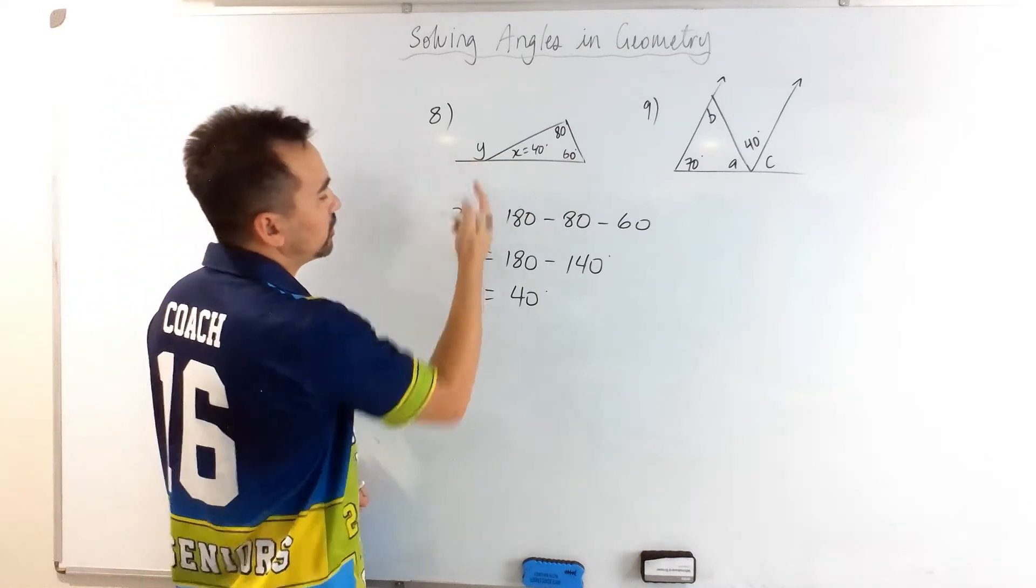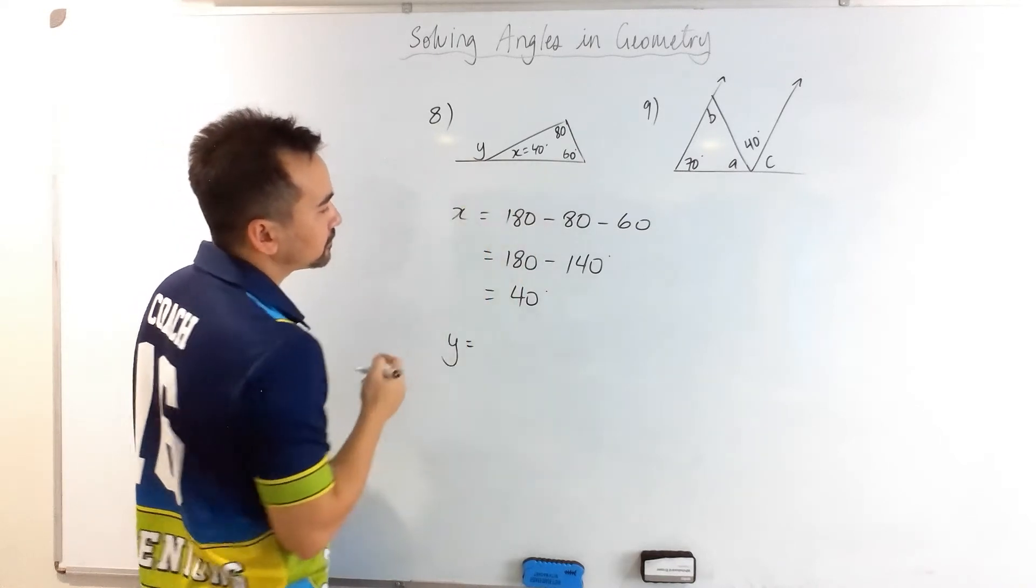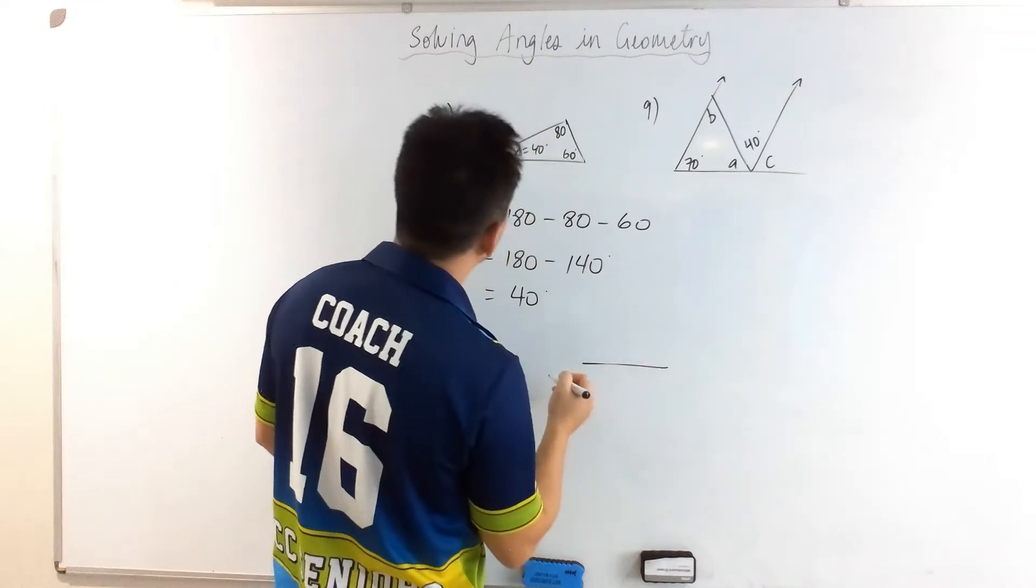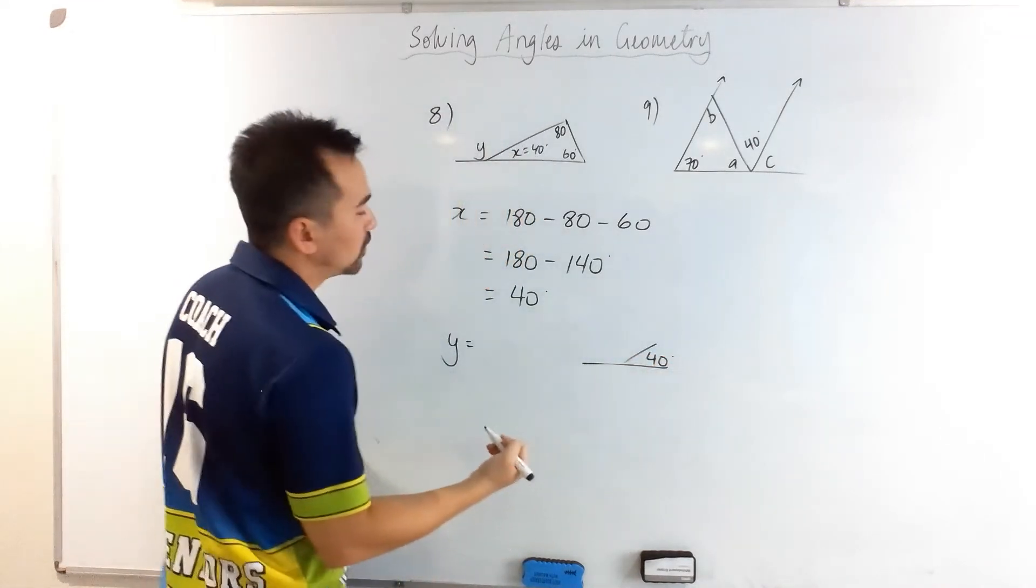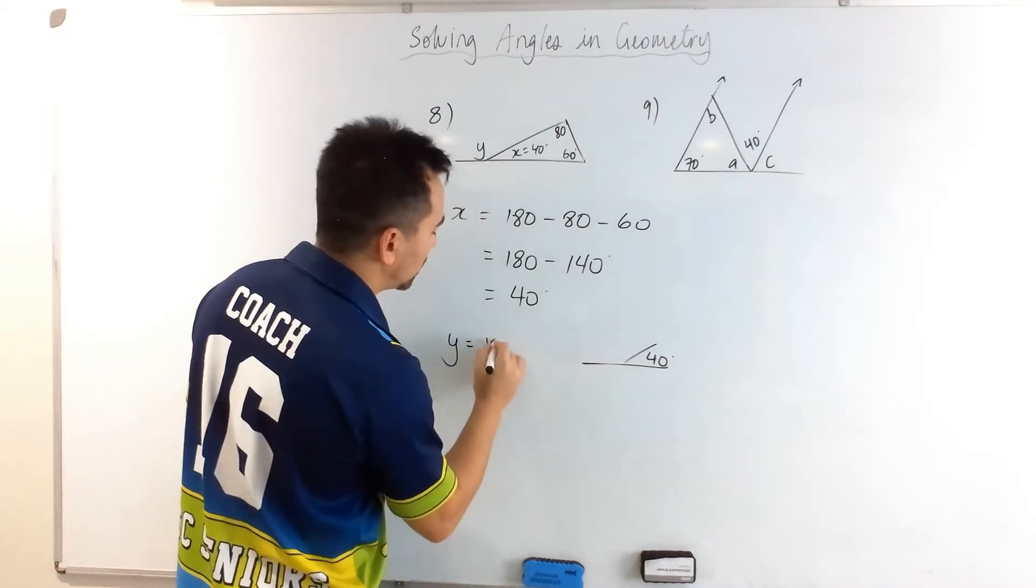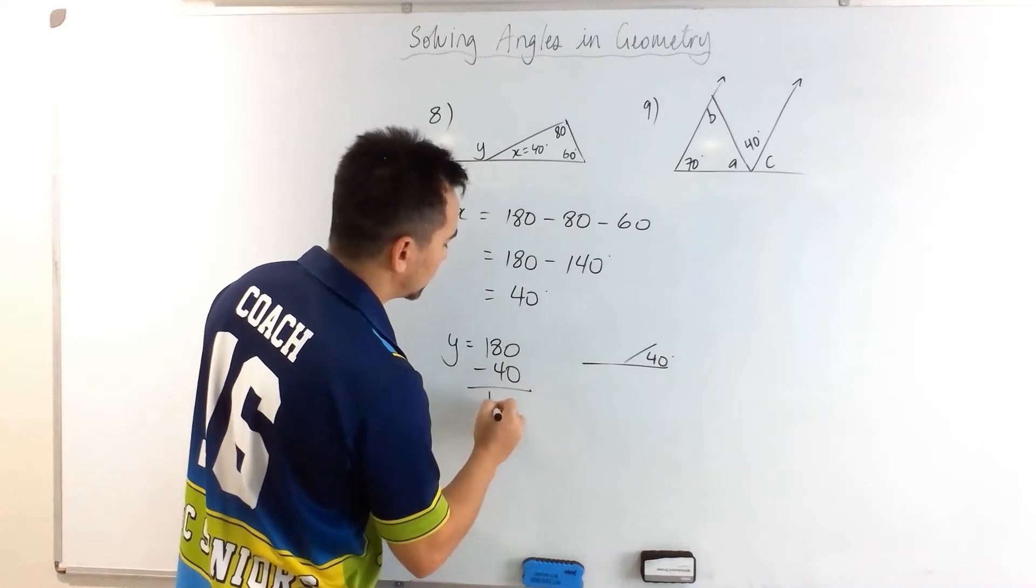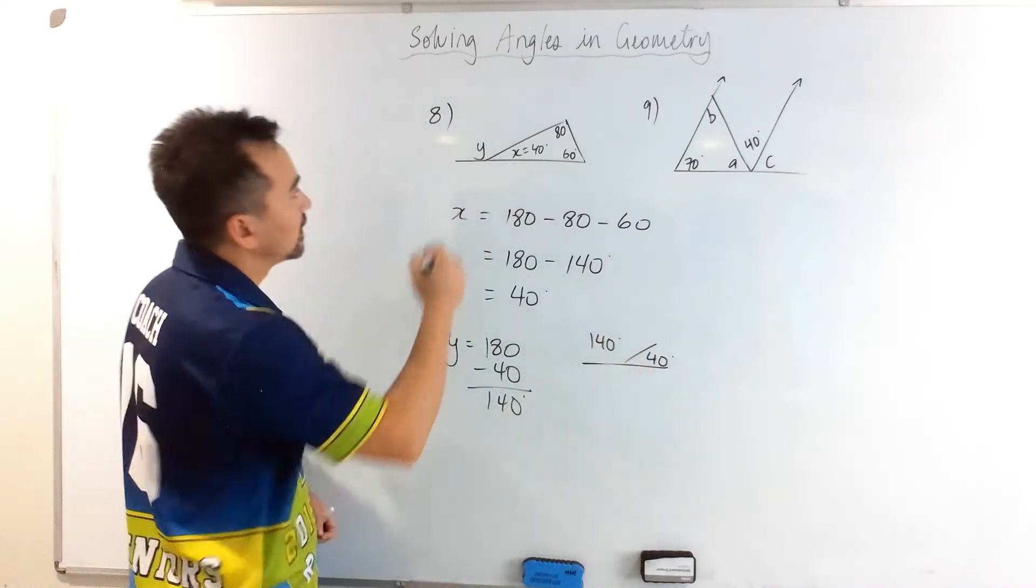to solve for y, we know that y is on a straight line, and if y is on a straight line, then if the right-hand side is 40, that means the left-hand side must be 180 take away 40, which is 140 degrees.